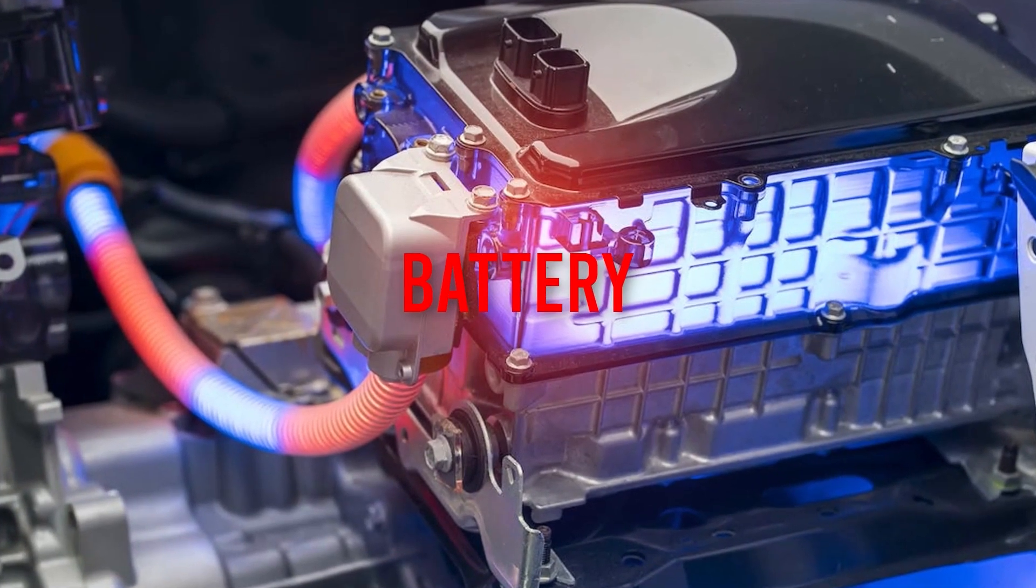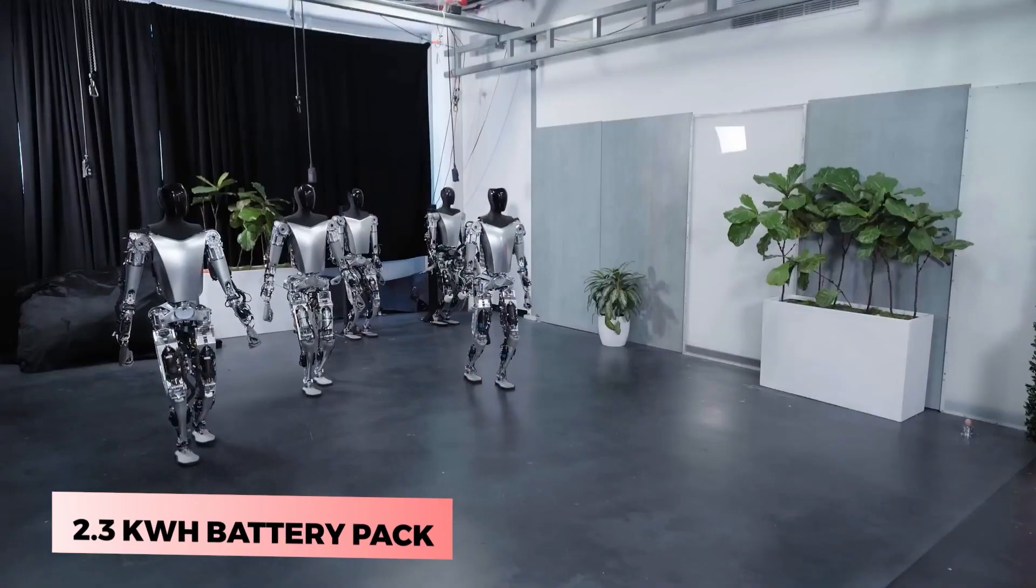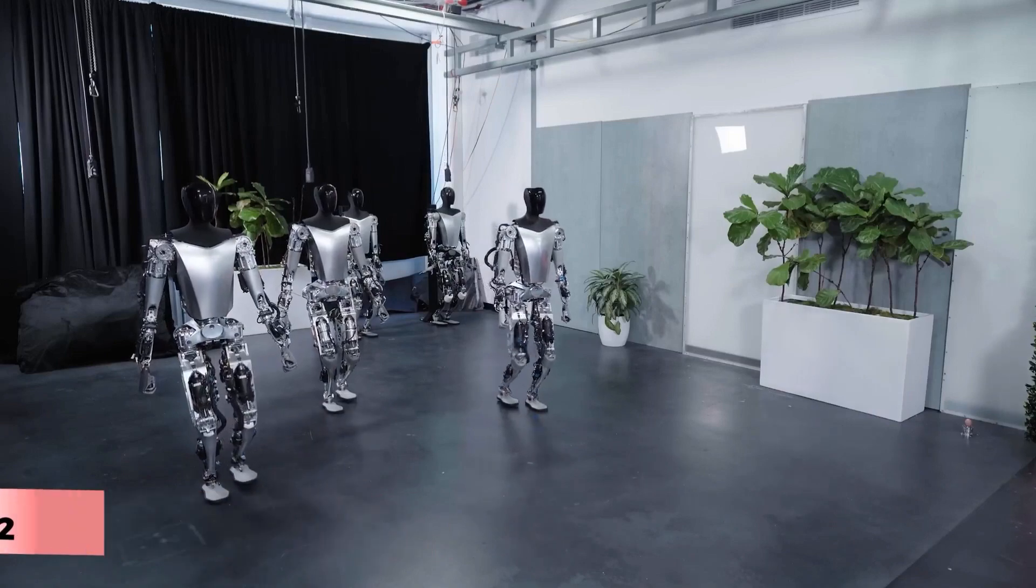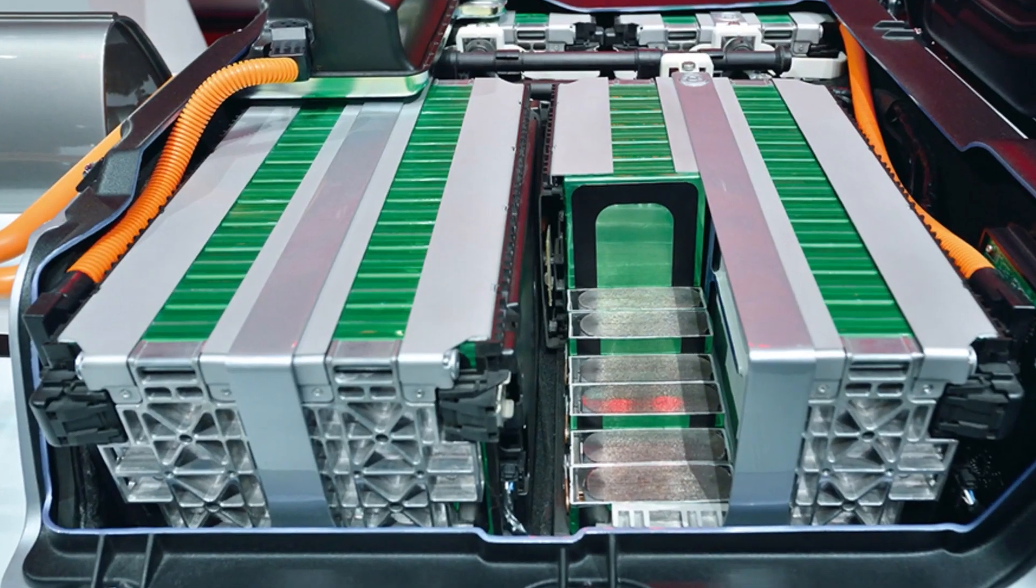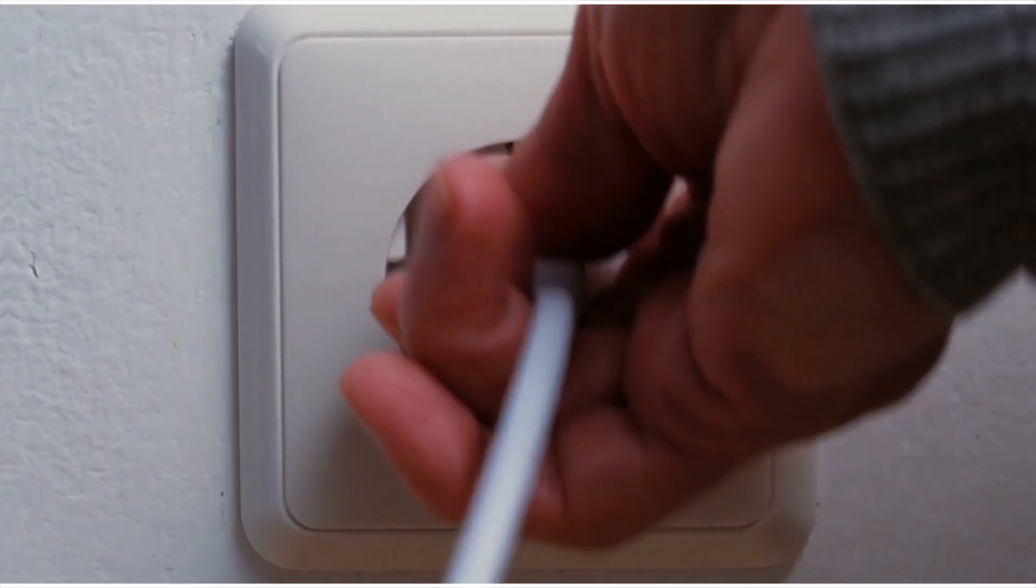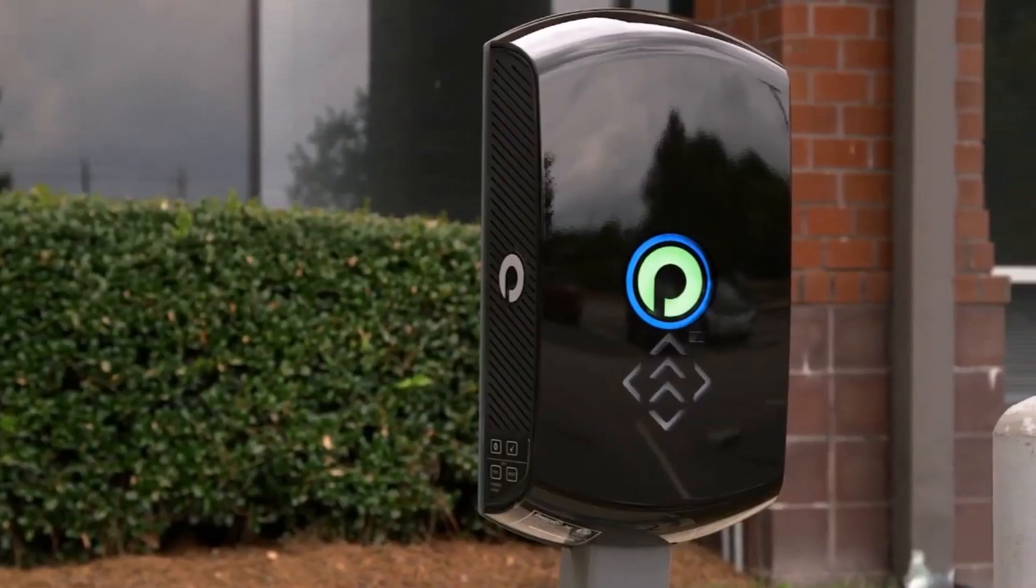Battery: Optimus has a 2.3 kilowatt-hour battery pack on its back that powers it for several hours. The battery pack is similar to the ones used in Tesla cars and can be recharged using a standard outlet or a wireless charger.